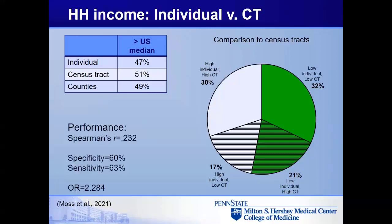The actual observed distribution is much closer to the 25% in each category, so census tract income is not doing a particularly good job predicting individual-level income. This is borne out in the performance characteristics: Spearman's R correlation is about .2, and specificity and sensitivity are around 60%. The odds ratio for being high income based on living in a high-income census tract versus a low-income one was about 2.3 — some signal, but not very strong.